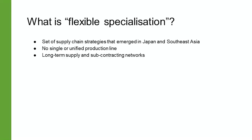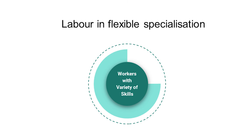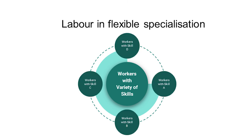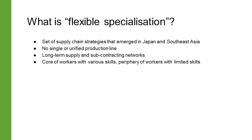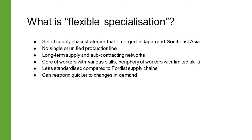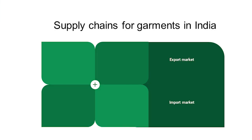Instead of a single production line, these new strategies used long-term supply and subcontracting networks. They employed a core of workers who had a variety of skills and could perform a variety of tasks, and a periphery of workers who had fewer skills and would perform fewer tasks repeatedly. These flexibly specialized supply chains were therefore less standardized, could respond quicker to changes in demand, and could also supply specialized goods.